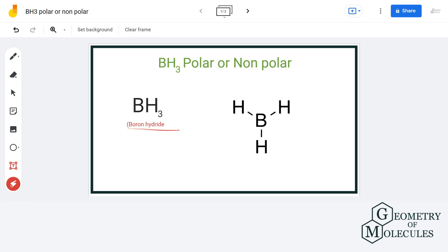It's the chemical formula of boron hydride. To understand its polarity, we will first look at its Lewis structure, followed by the electronegativity values, and then we will draw the conclusion by looking at its molecular geometry.